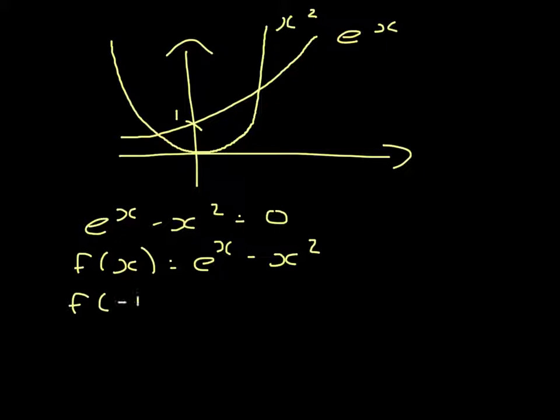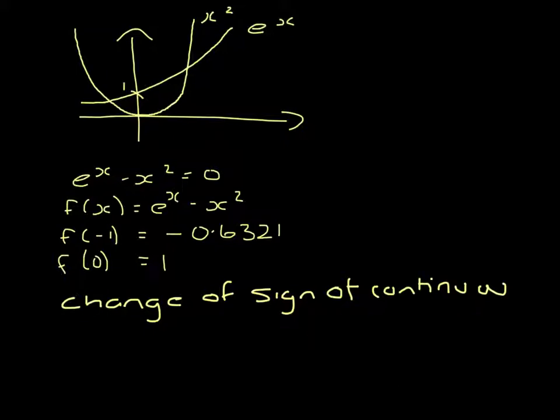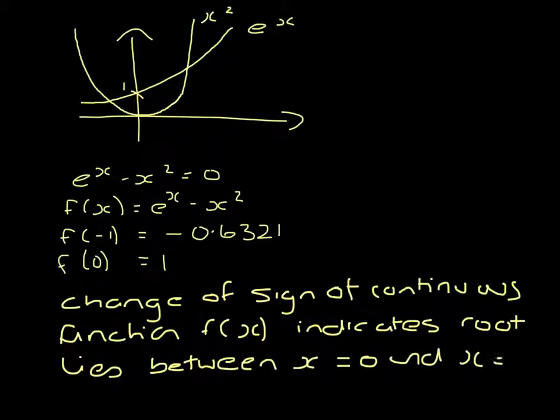So f of minus 1 would be negative 0.6321 and f of 0 would be 1. The change of sign of a continuous function f of x indicates the root lies between x equals 0 and x equals minus 1.